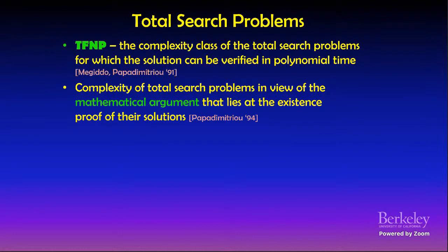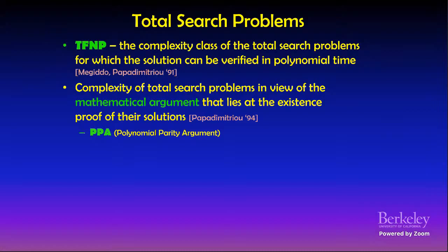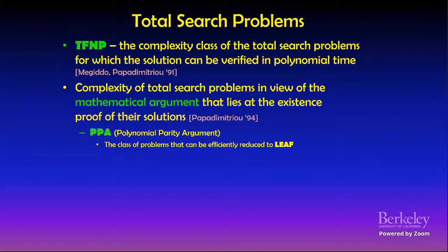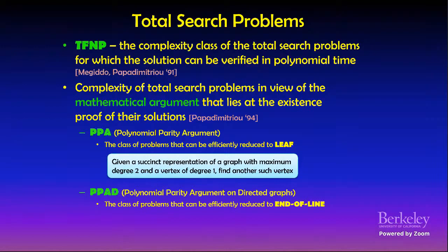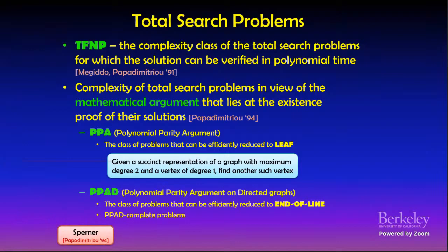Since these proofs are based on tools from topology, it is not surprising that they are not constructive — they do not supply an efficient polynomial-time algorithm that, given a cycle and a partition, finds an independent set that fairly represents it. Understanding the complexity of such problems is the main motivation for this talk. The class TFNP was defined in 1991 by Megiddo and Papadimitriou as the class of all total search problems where every input is guaranteed to have a solution verifiable in polynomial time.